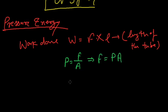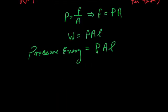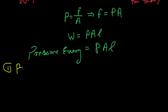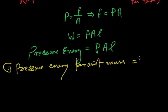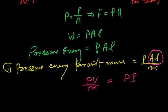Put the value of F, and PAL is the pressure energy. PAL, or pressure energy per unit mass, is equal to PAL upon m. Here AL is volume, so PV by m. And volume upon mass is density, that is P upon rho.